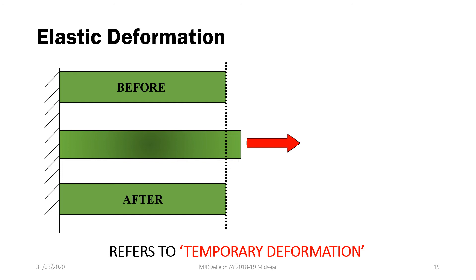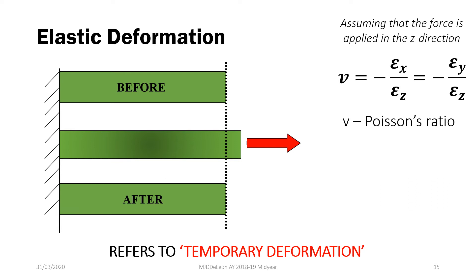In elastic deformation, if the force is applied in the z-direction, elongating a material in one direction will cause the other dimensions — x and y — to shrink. The Poisson's ratio, V, quantifies how much those other dimensions shrink when we subject our material to uniaxial loading. Poisson's ratio equals the negative of the strain in the x-direction over the strain in the z-direction, or the negative of the strain in the y-direction over the strain in the z-direction. For isotropic materials, the Poisson's ratio gives a relationship: E equals 2G times (1 + V).